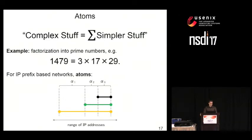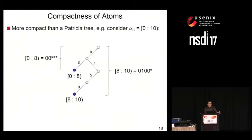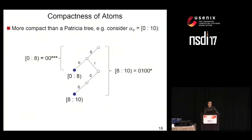An atom itself is nothing but a half-closed interval delineated by vertical dashed lines. There is an important compactness property of atoms. In previous work, atoms might have been represented by Patricia trees, but that's not what we do — our implementation uses a balanced binary search tree. For example, an atom spanning the interval from 0 to 10: a Patricia tree would need at least two nodes, one for the interval 0 to 8 and another for 8 to 10, whose union gives the atom. We avoid this indirection and represent atoms directly through their endpoints in the balanced binary search tree.